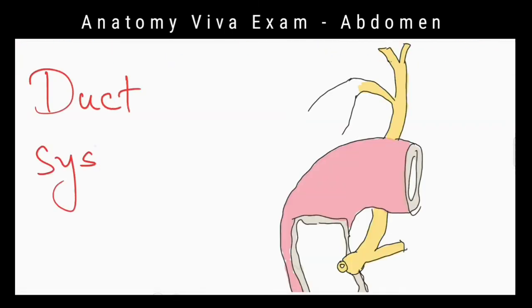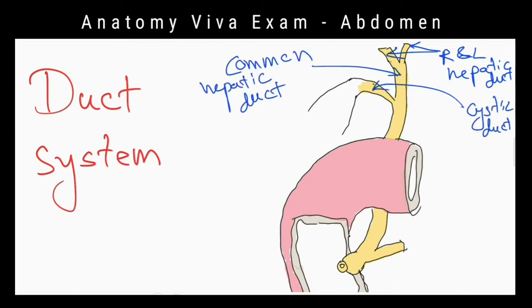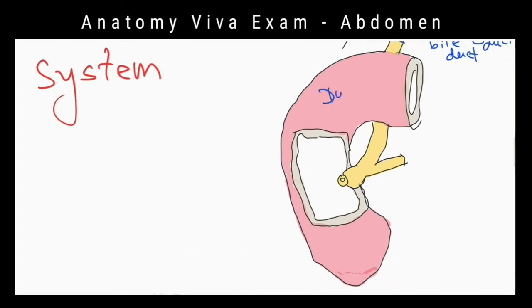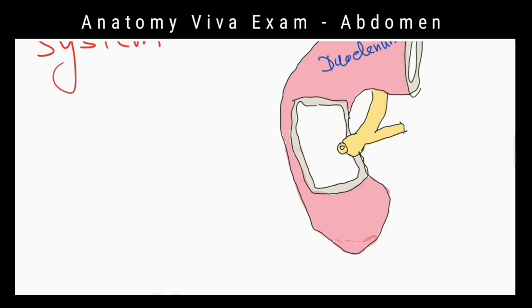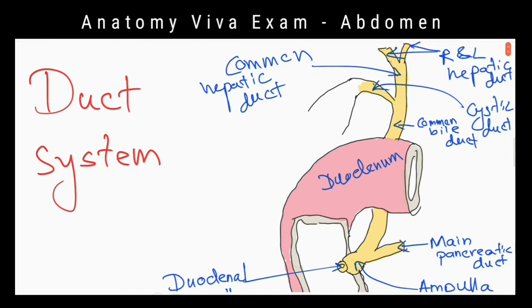Can you tell me the course of the common bile duct? The common bile duct is formed by the union of the cystic and common hepatic ducts. It runs downwards and backwards — first in the free margin of the lesser omentum, then behind the first part of the duodenum, then it lies behind the posterior surface of the head of the pancreas, and opens into the major papilla of the duodenum with the pancreatic duct.